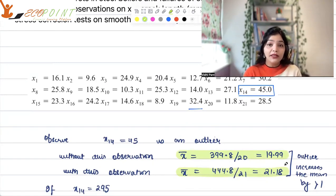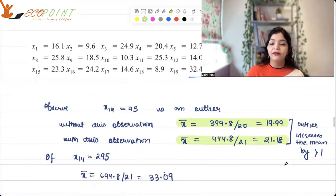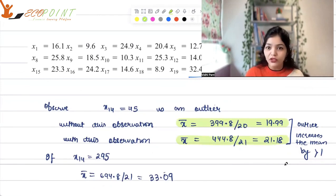Now, if it's a big outlier, catastrophic value, say 295 millimeters as a crack. So, if I took that, then the mean will turn out to be 33.09 which is much, much more than the values here. In fact, if a value is 32.4 which is around 33, otherwise, none of the values are even around this.